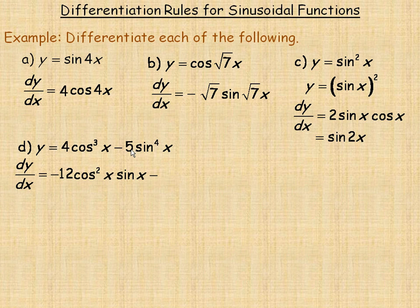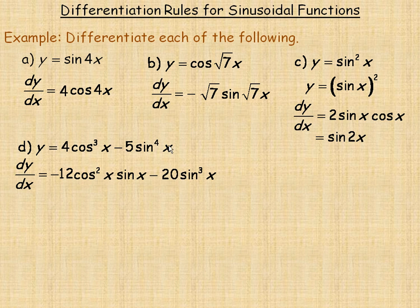For the derivative of 5sin⁴x, the 4 comes down and multiplies by 5 to give 20. We're doing power rule, so we subtract 1 from the exponent to get 3. Then we multiply by the derivative of the inside function sin(x), which is cos(x).